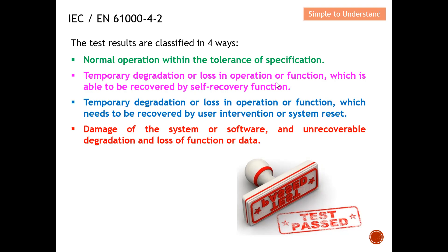Category three: temporary degradation or loss of function that requires recovery by user intervention or system reset — similar to category two but requiring manual action such as pressing reset. Category four: damage to the system or software that cannot be recovered, or loss of data — in this case the EUT is damaged and you will fail the test.